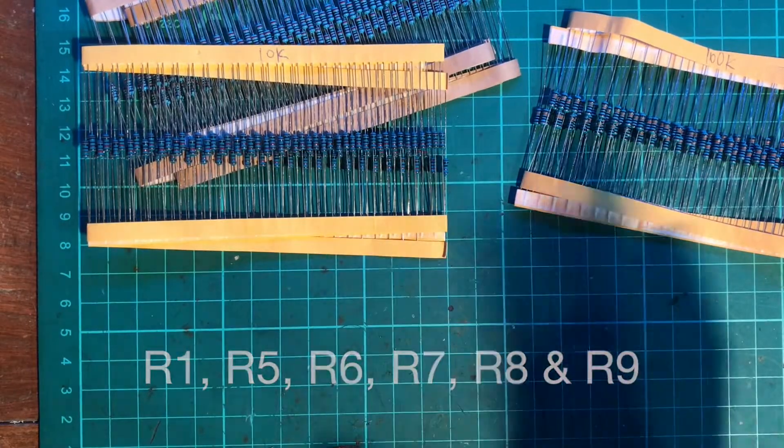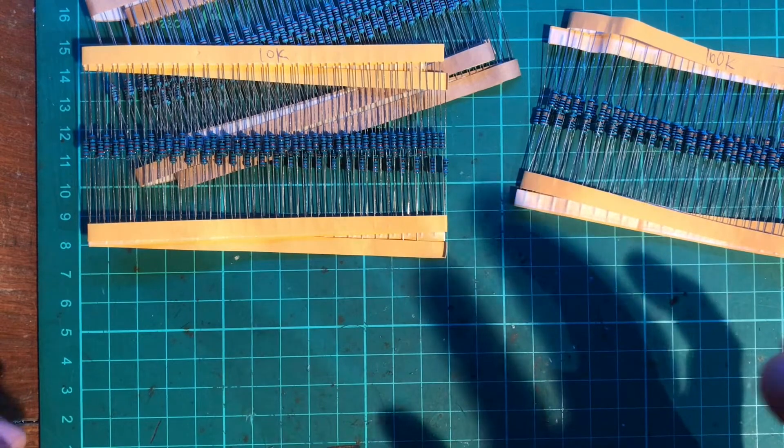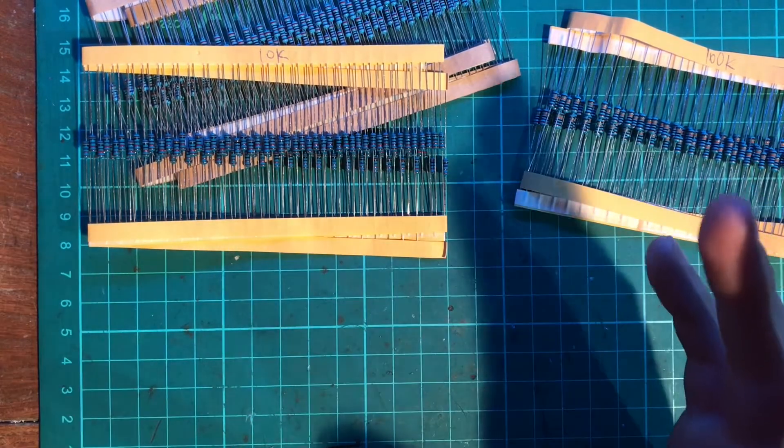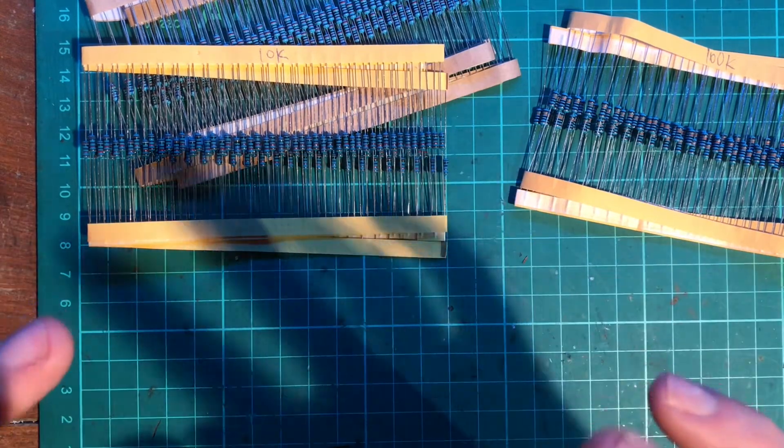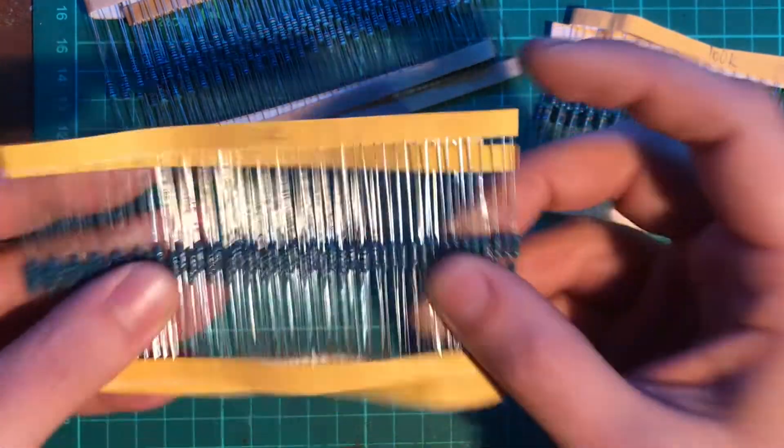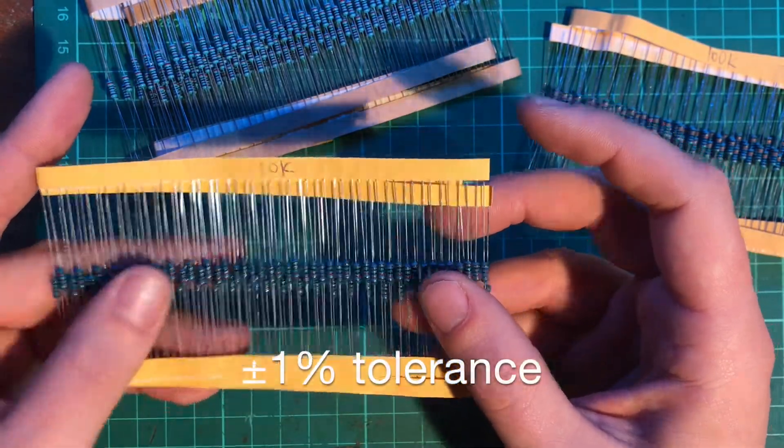What you can do if you're a fancy person is swap them out for 0.1% tolerance resistors. They're a bit more expensive, so a cheaper alternative is to just match resistors and use these widely available, pretty cheap, 1% tolerance resistors.